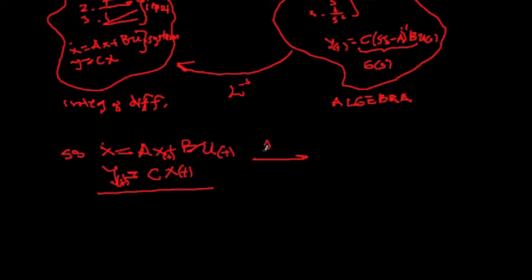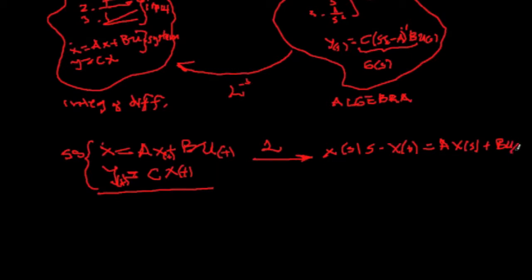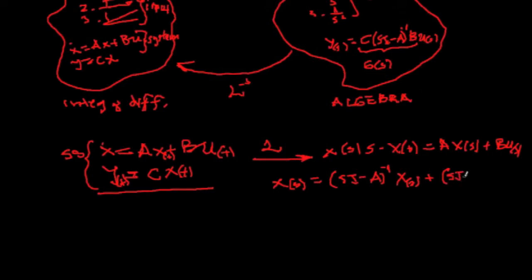If we take the Laplace transform of this state space model, we will obtain: sX(s) - x₀ = AX(s) + BU(s). Rearranging these terms leads to X(s) = (sI - A)⁻¹ x₀ + (sI - A)⁻¹ B U(s).